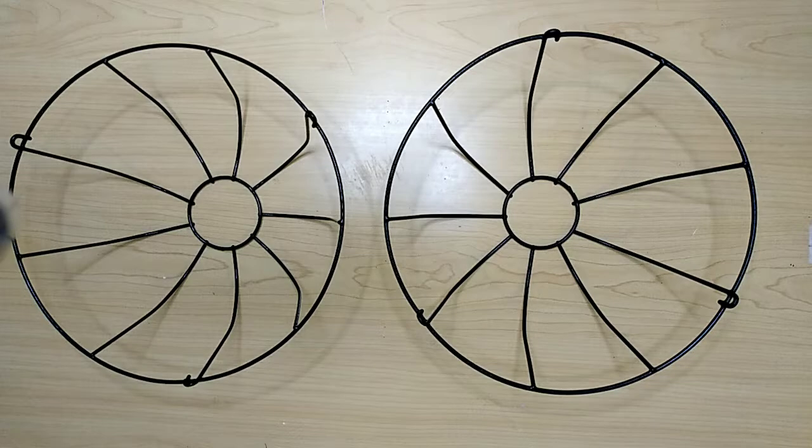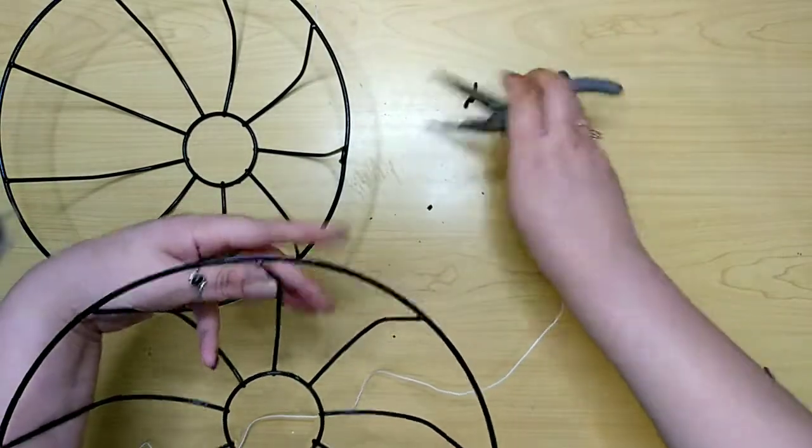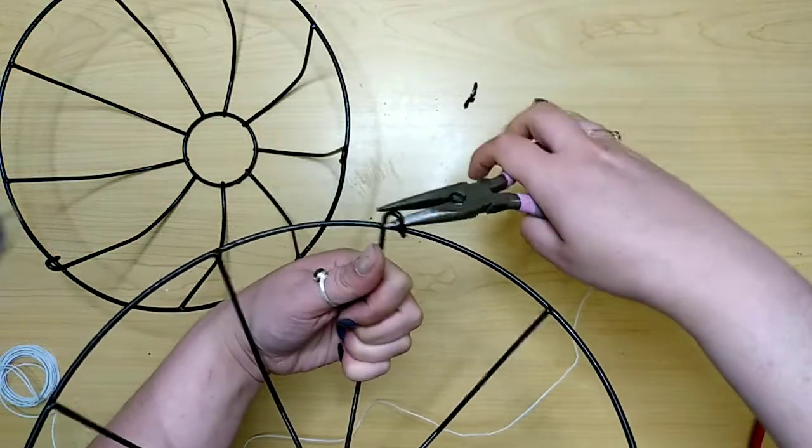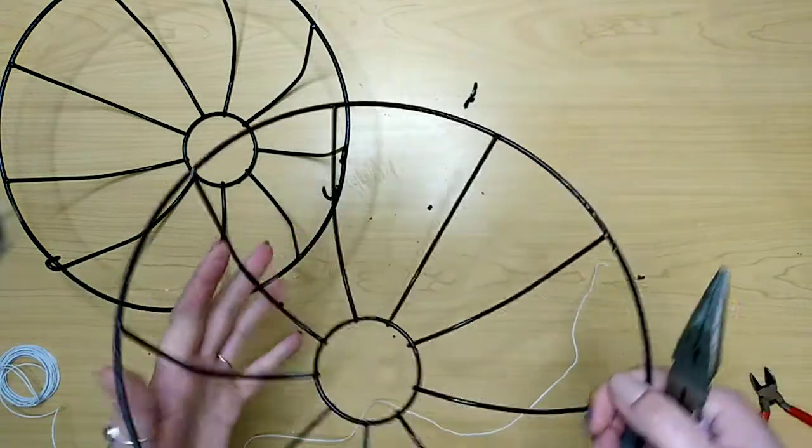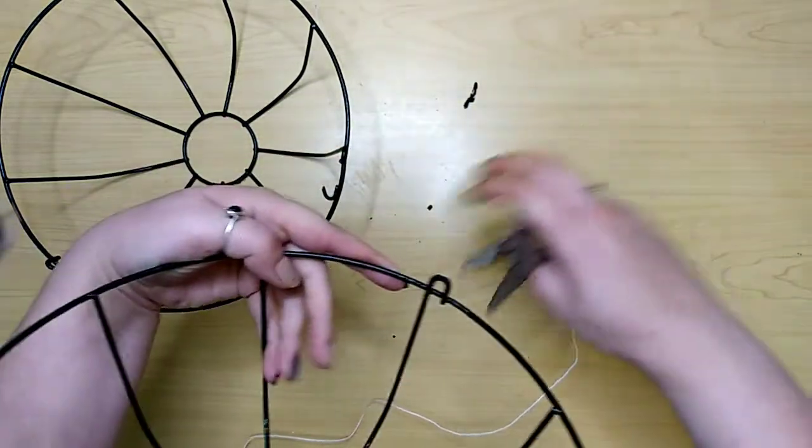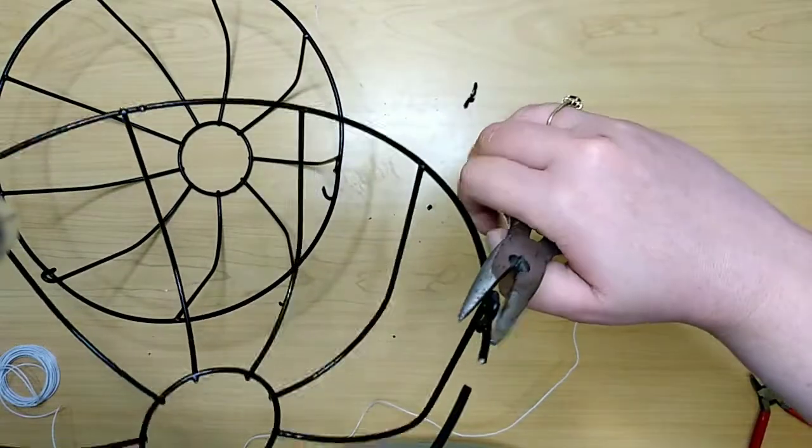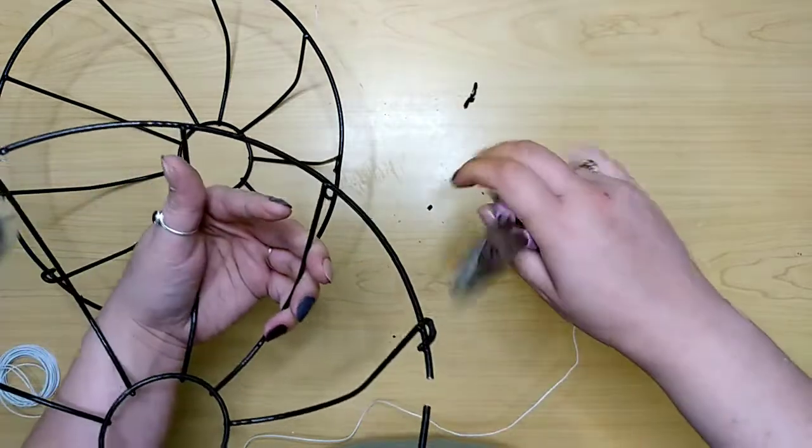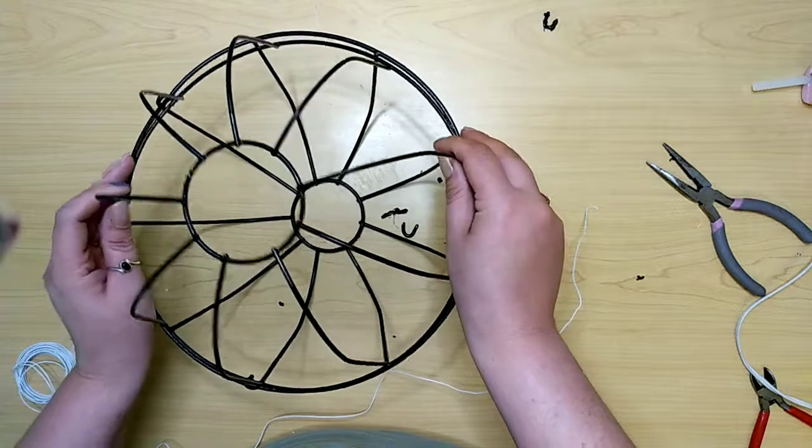For this project you will need two of these baskets from the Dollar Tree. They're hanging baskets and I removed their chains. They have these little loops where the chains hook onto and I needed to remove those from one of the baskets because they kept getting in the way when I was trying to put them together. Just take some pliers and you pull it away from the main thing. Be careful because this will happen and then just bend it back and forth to remove it. It'll break off pretty easy but also can break pretty easy.